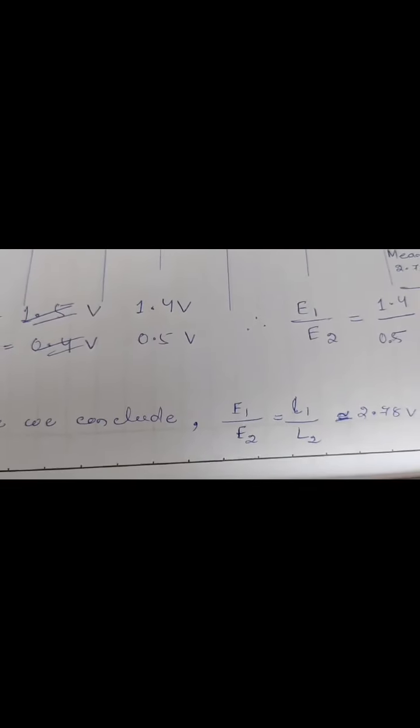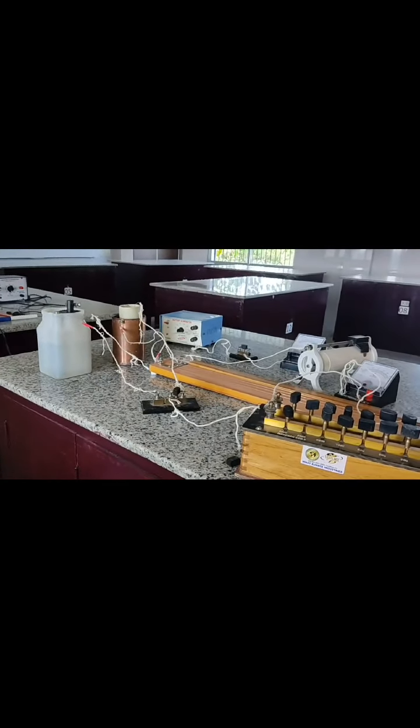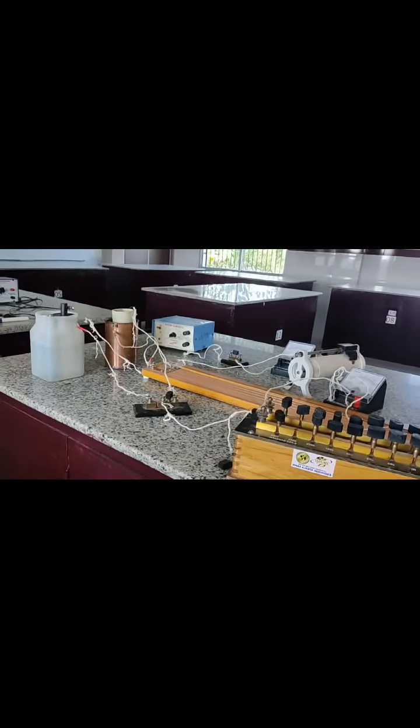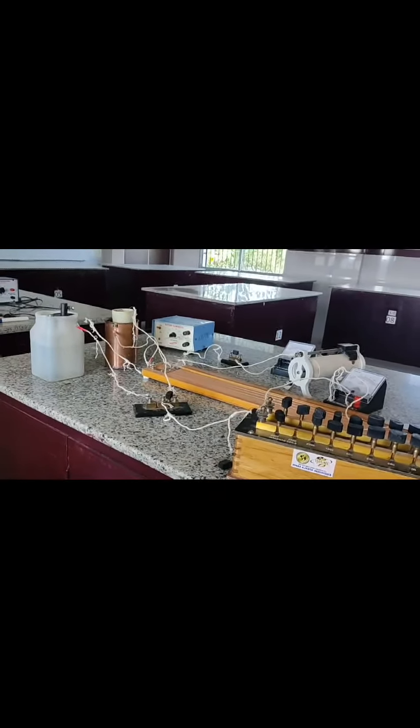Students, this is the observation I have taken. The mean of the readings came as 2.73, whereas the actual value of the EMF ratio is 2.8. So we conclude that the EMFs of the two cells are nearly equal as per the experiment. Hope you all followed this experiment with me. If you have any confusion, comment in the comment box and we will clarify that. Thank you.